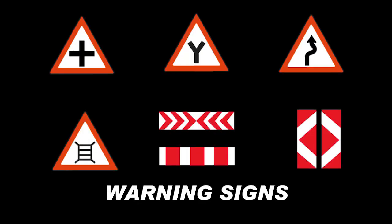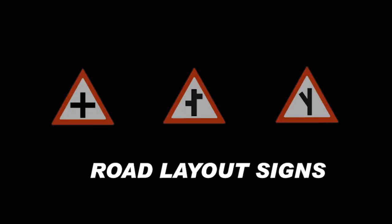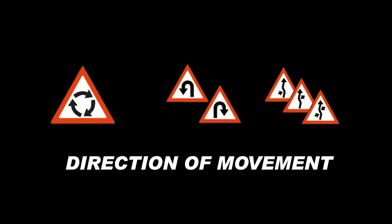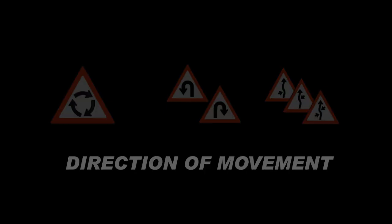Warning signs are triangular in shape with a white background and a red border, warning you of a change or possible hazard on the road ahead. Chevrons also fall in this category. Warning signs are divided into three categories: road layout signs, which warn of the layout of the road ahead; direction of movement signs, which warn of the direction of traffic flow ahead; and symbolic signs, which warn of a hazard indicated by a symbol.